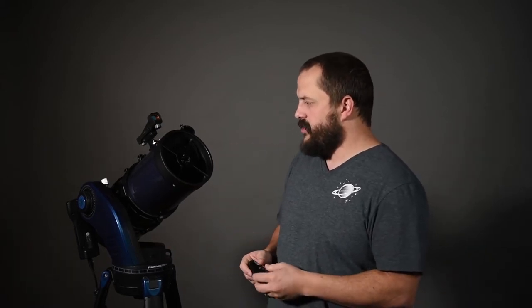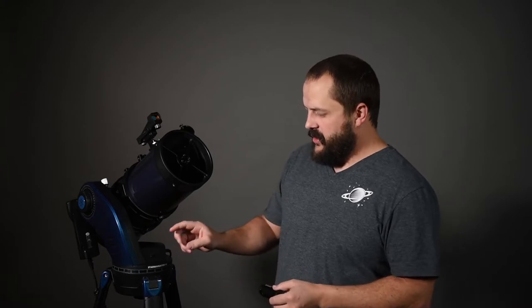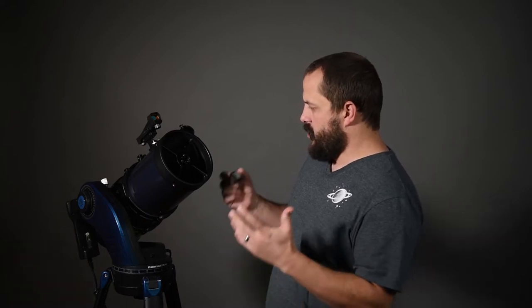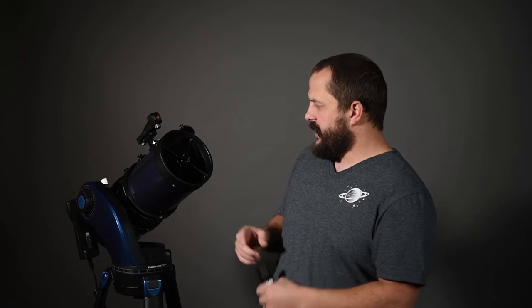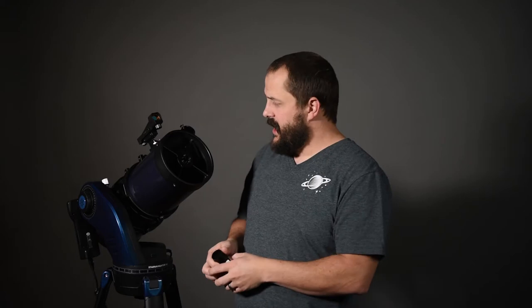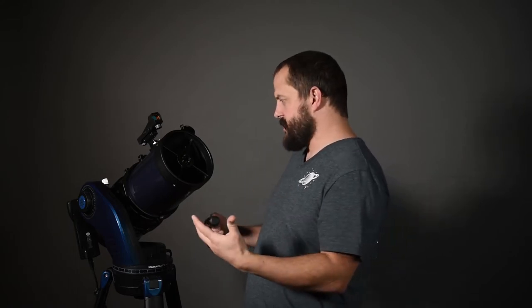So what is a Bird-Jones telescope? Well, it's a slightly different flavor from the regular reflector telescopes out there. What it basically means is that there is a corrector optic lens at the very bottom of the focusing tube which will actually slightly correct some of the optics of the telescope. Some people will refer to it as a Barlow lens. That's kind of what it does.